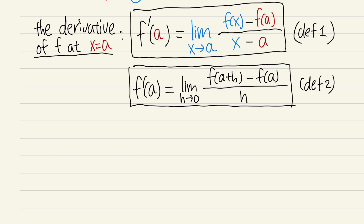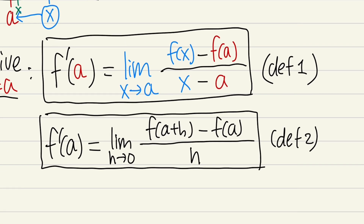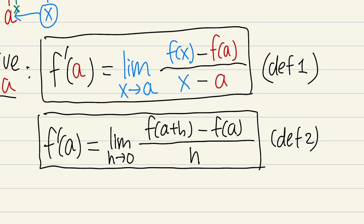Question: how do we get to Definition 2 from Definition 1? The only difference is the inside. If you substitute x equals a plus h, then on the bottom you get a plus h minus a, the a's cancel, and you just get h. That's exactly Definition 2.